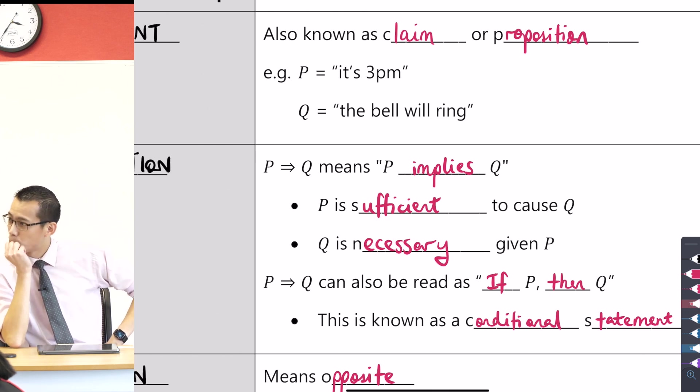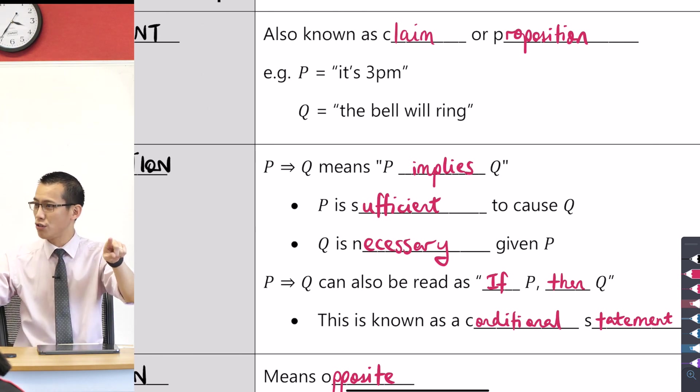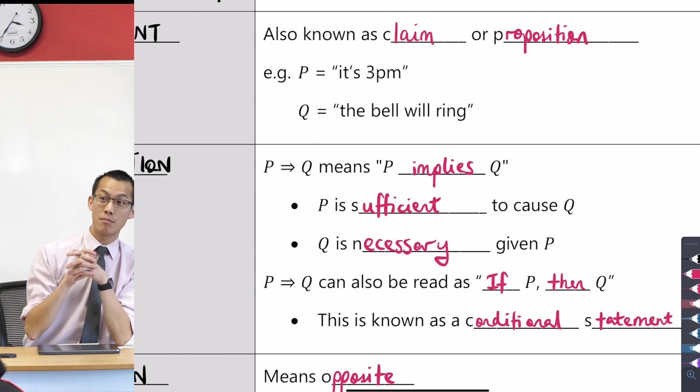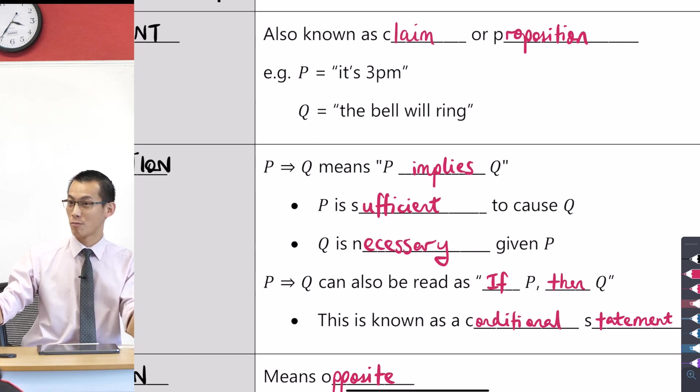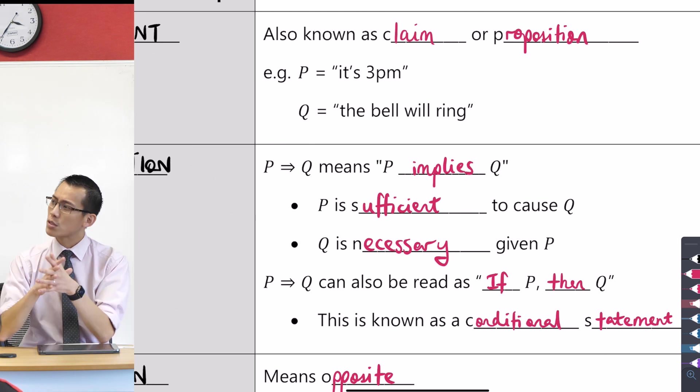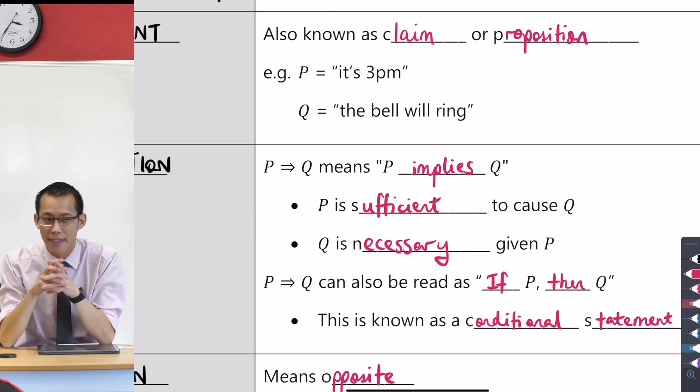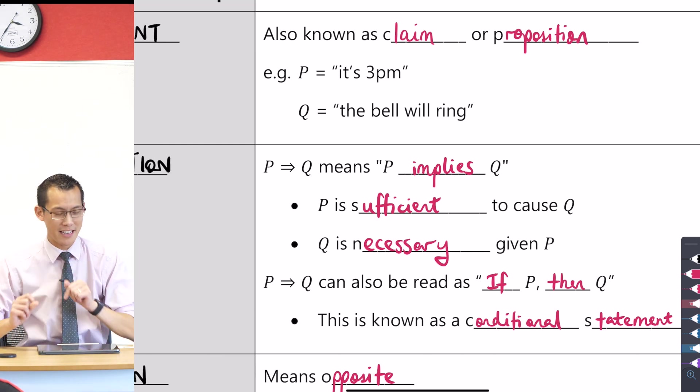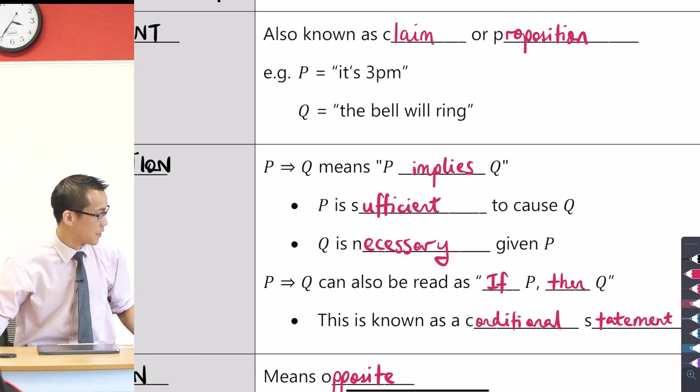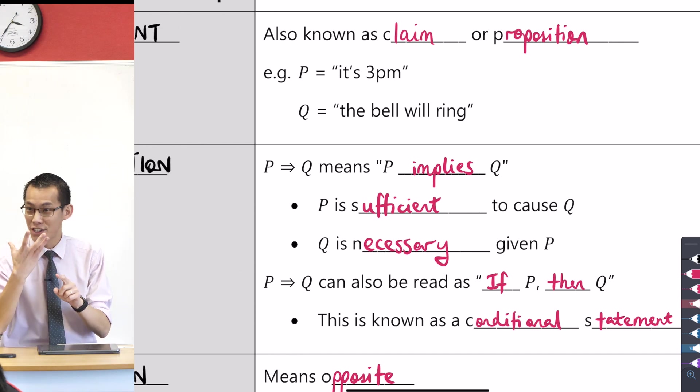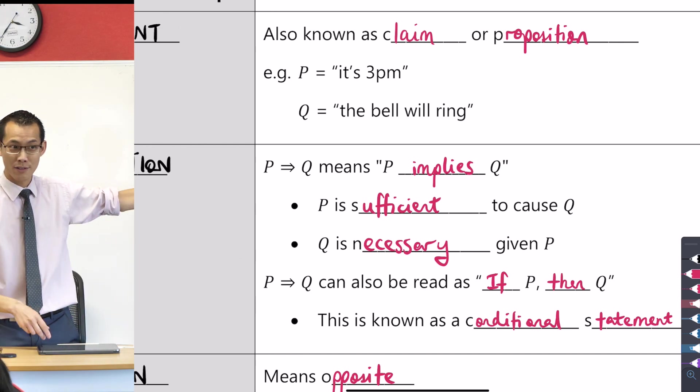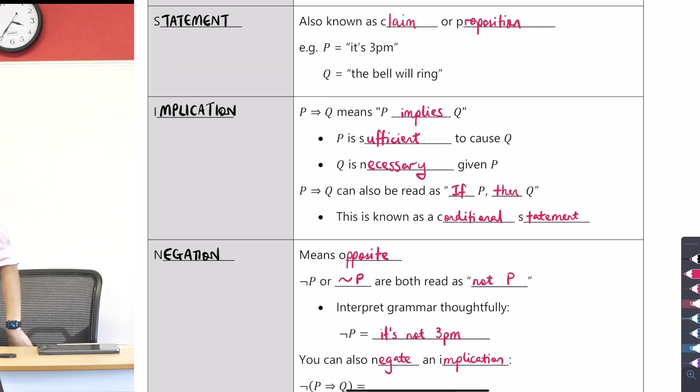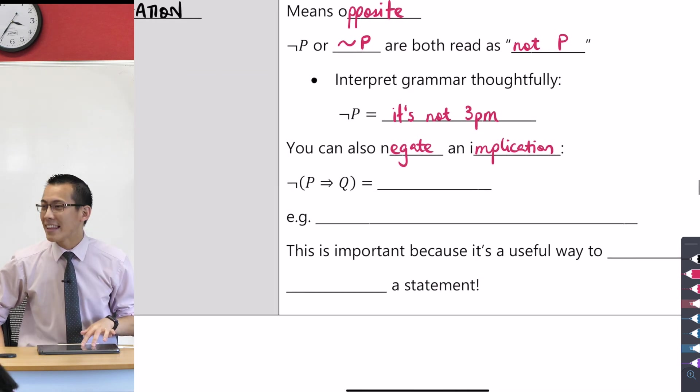In fact, I'm going to get you to turn to the person next to you in a second to see if you can turn this into English and the appropriate symbols. This is P, this is Q. So P implies Q, you would say in English as if it's 3 p.m. then the bell will ring. That's P implies Q. So what would be the negation of that? Think for a second and then turn to the person next to you. I'm going to give you, I'm actually going to wander around a little bit. How would you say this in English, the negation of P then Q? And how would you write it in symbols? Take a moment, I'm going to wander around a little bit.